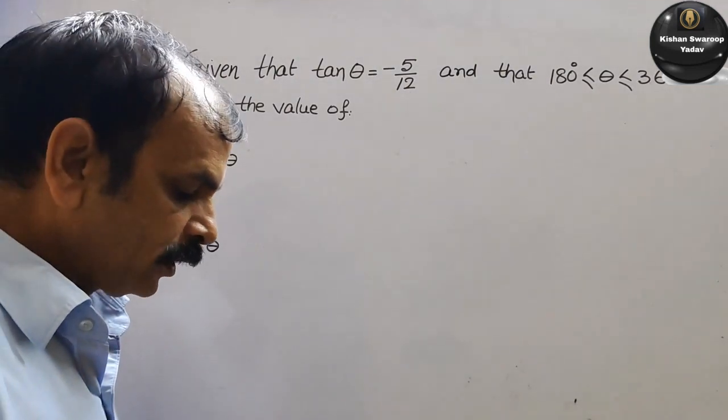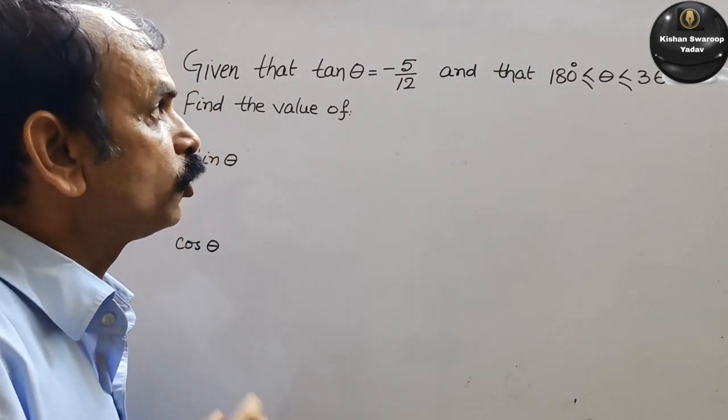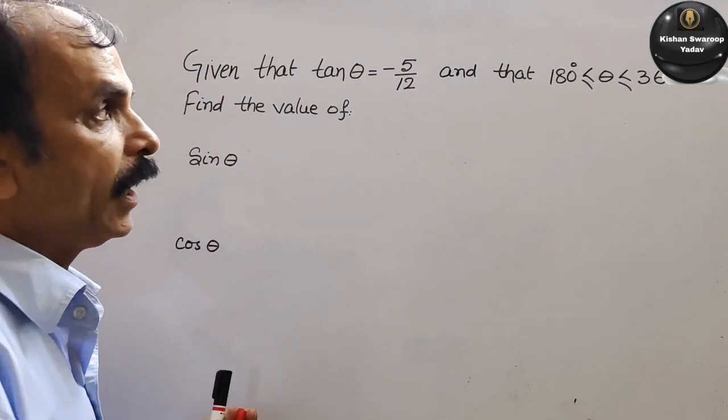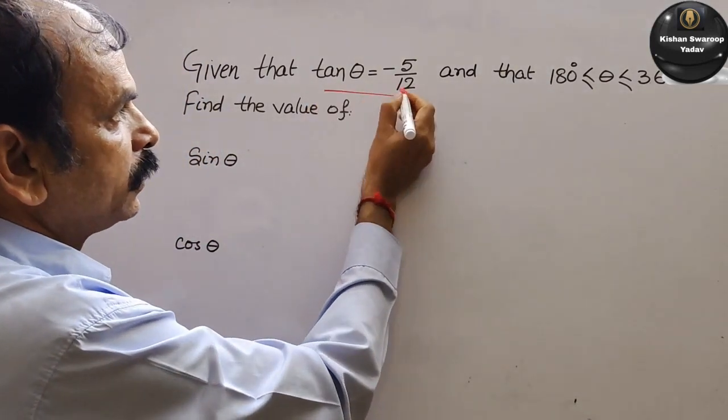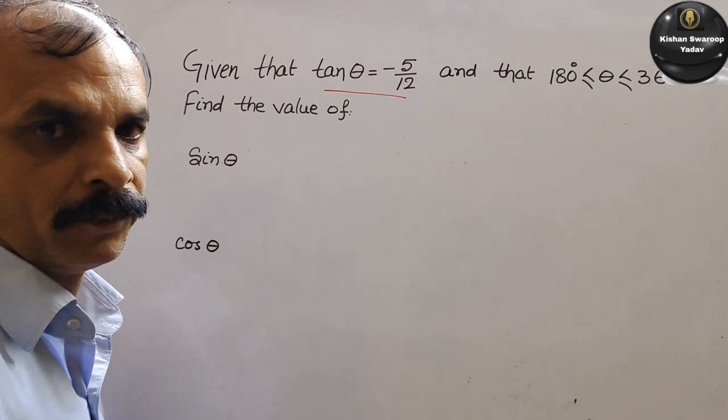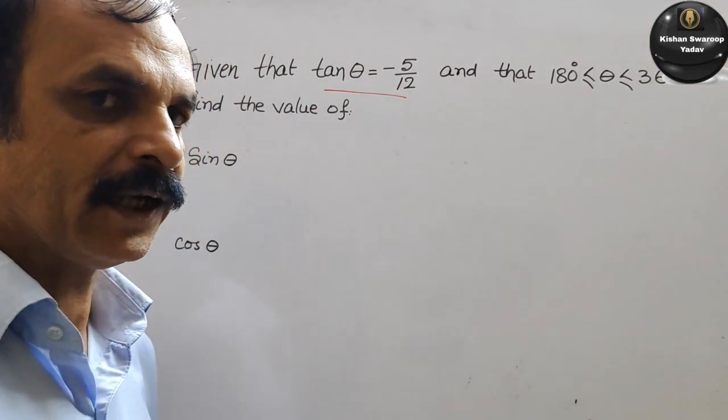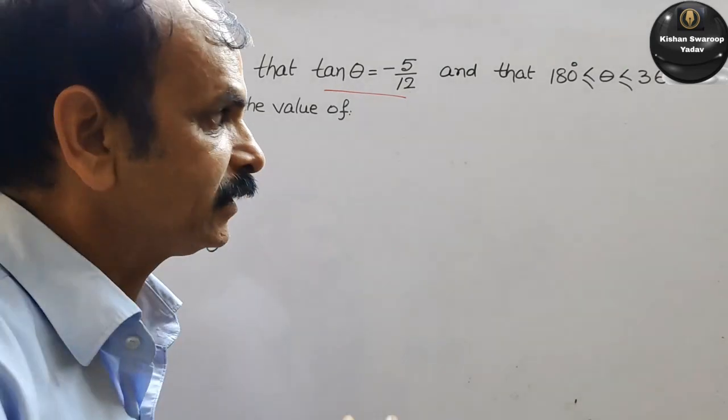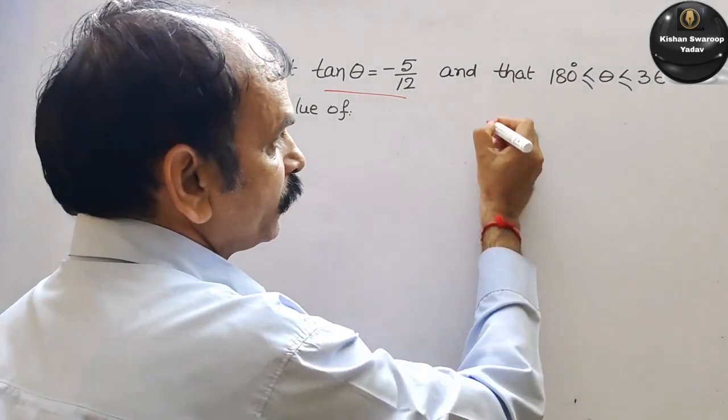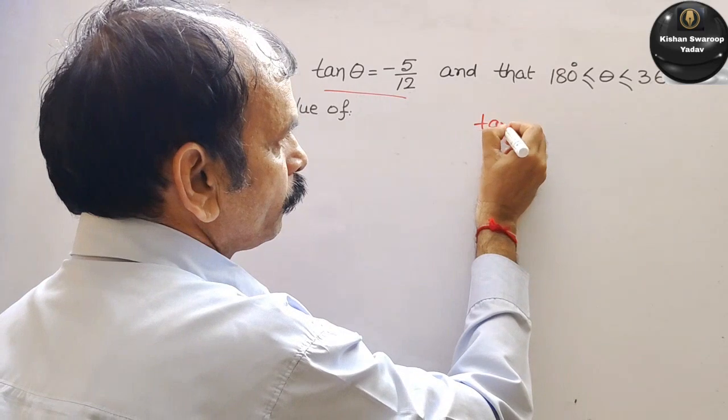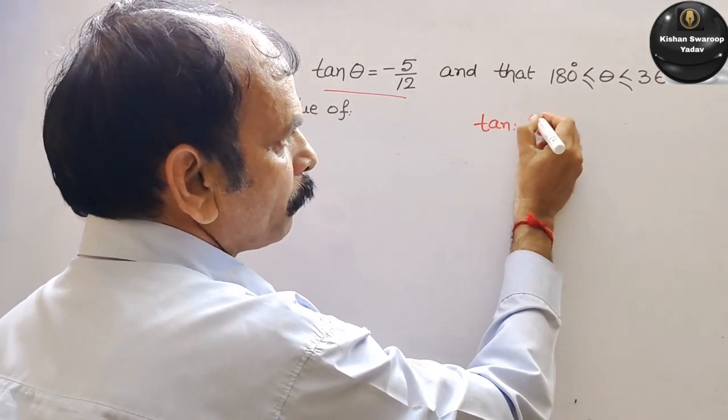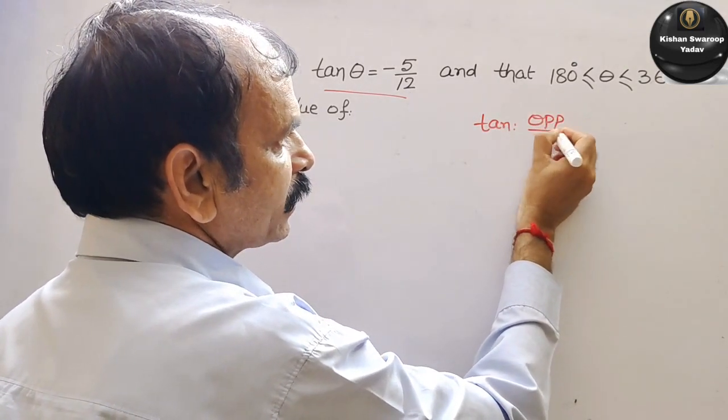So what they have told? They have told that tan theta is minus 5 by 12. What is tan? Tan is the ratio of opposite by adjacent. That only we will write, tan is opposite by adjacent.